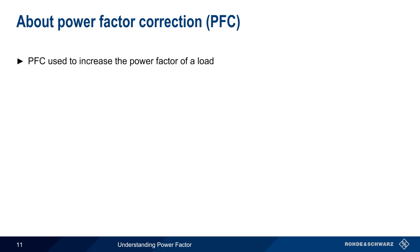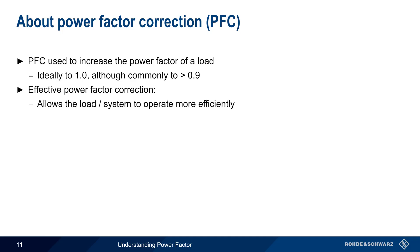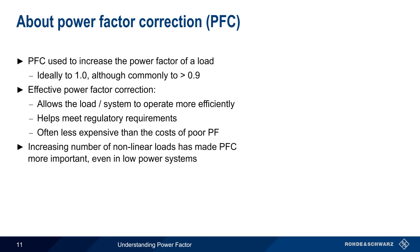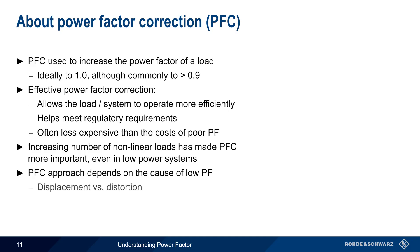Power factor correction refers to methods used to increase the power factor of a load, ideally to 1 or unity, but usually to at least 0.9. Effective power factor correction helps a system run more efficiently, thus saving both utility and equipment costs. In some areas and applications, power factor correction is also required in order to meet standards or regulatory requirements. In many cases, the cost of implementing power factor correction is substantially lower than increased utility or equipment costs. Since the number of non-linear loads has been steadily increasing, the importance of power factor correction has also been increasing, and this is true even for lower power, non-industrial systems. The approach used in power factor correction depends on the cause of reduced power factor — that is, whether low power factor is due to displacement or distortion.